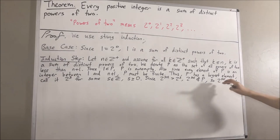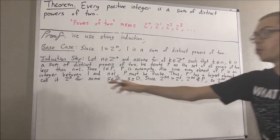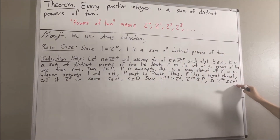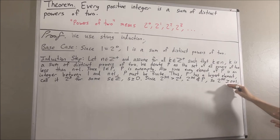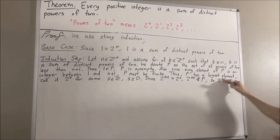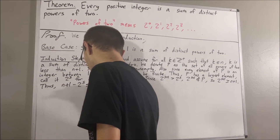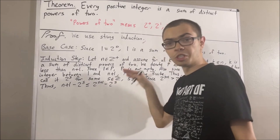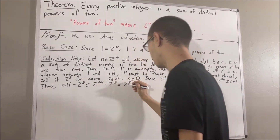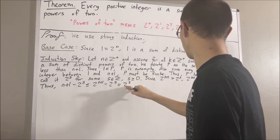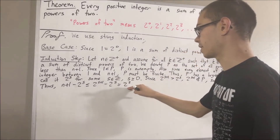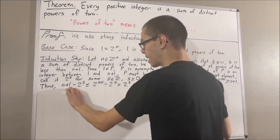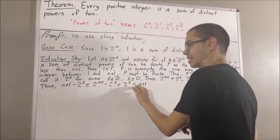Now let's take this inequality and subtract two to the s on both sides. If we do that, we get n plus one minus two to the s is less than or equal to two to the s plus one minus two to the s. And two to the s plus one minus two to the s is equal to two to the s. Since two to the s is an element of p, we know that two to the s is less than n plus one. So, n plus one minus two to the s is less than n plus one.